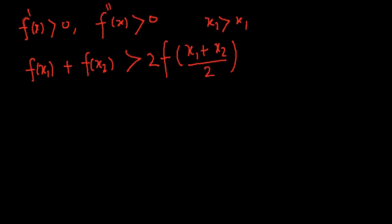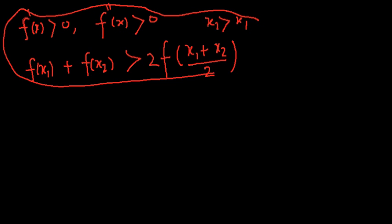If x2 is greater than x1, and f'(x) > 0, f''(x) > 0, then f'(x1) + f'(x2) is greater than two times f'((x1+x2)/2). The x-coordinate of the midpoint of the line segment joining two points a(x1, y1) and b(x2, y2) is (x1+x2)/2.